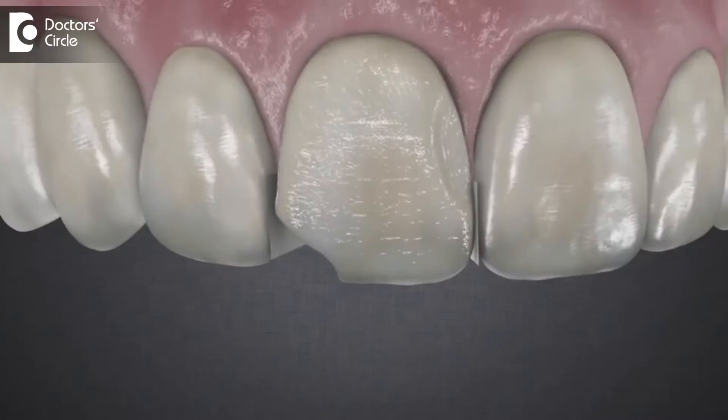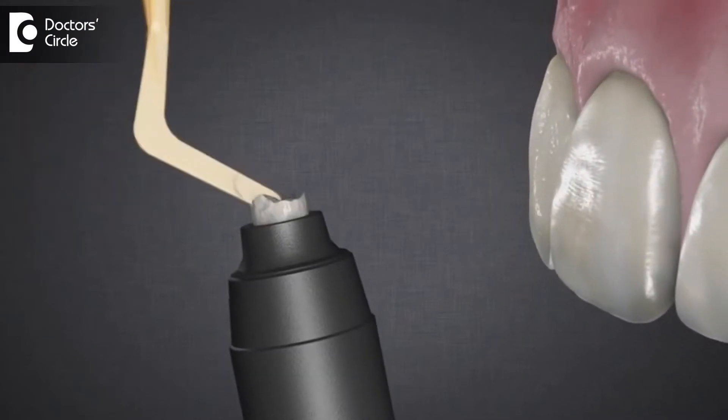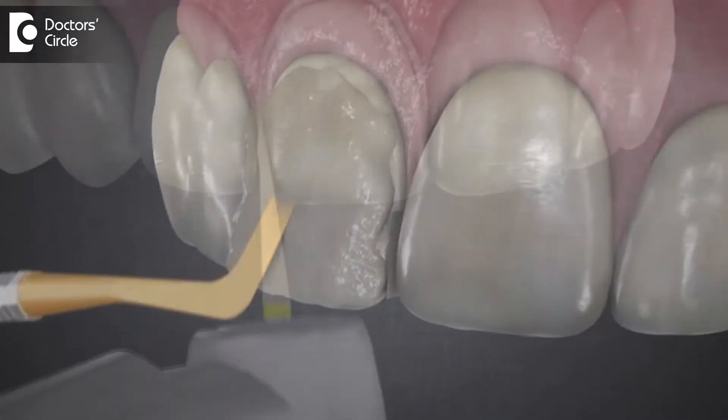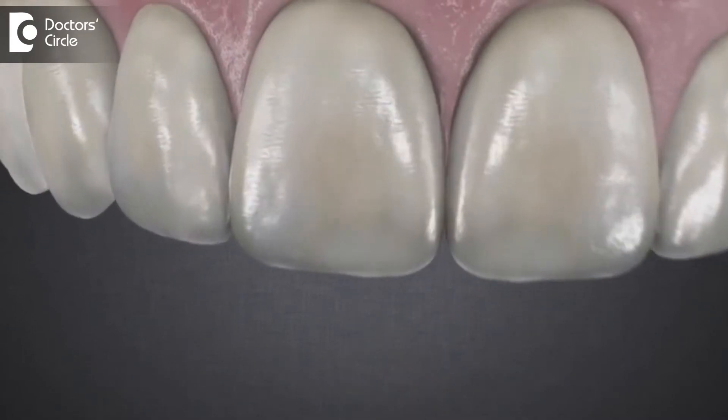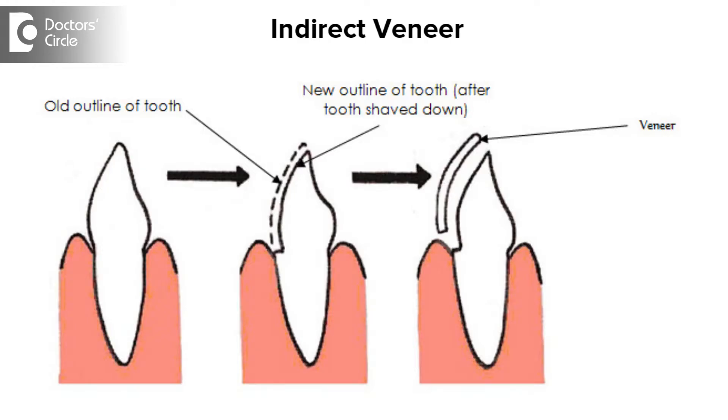There are two types of veneers mainly. One is composite and one is ceramic veneering. These can be broadly classified into direct and indirect veneers as well. Direct veneers are basically composite veneers where the composite, the filling material, is directly built up onto the tooth layer itself. Indirect veneers is basically where we prep the tooth and we place a veneer material onto the tooth surface itself.